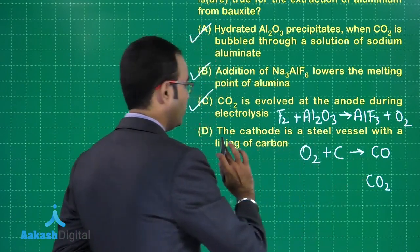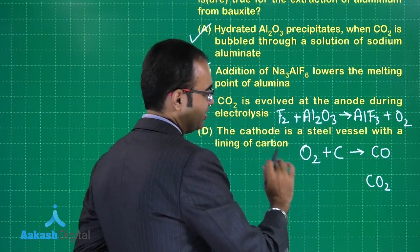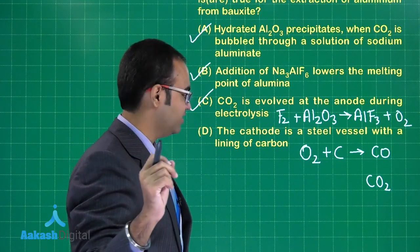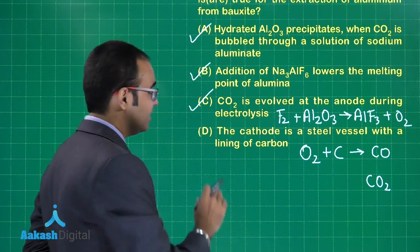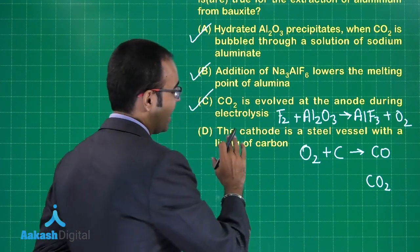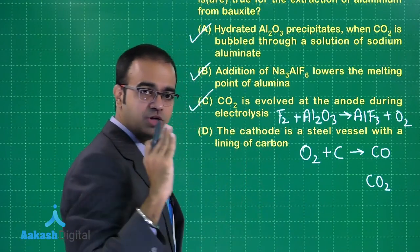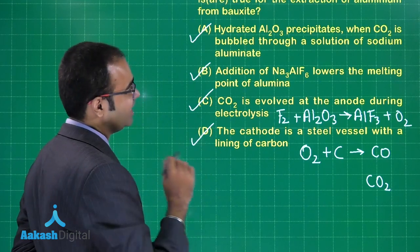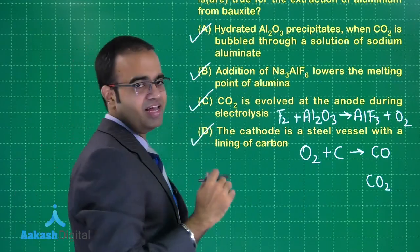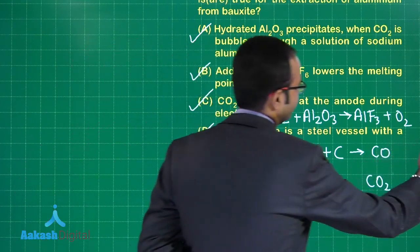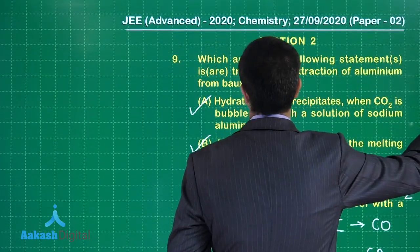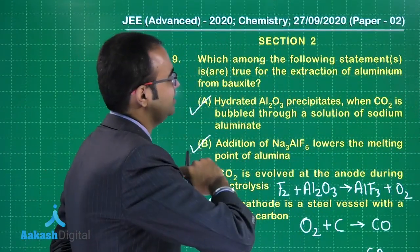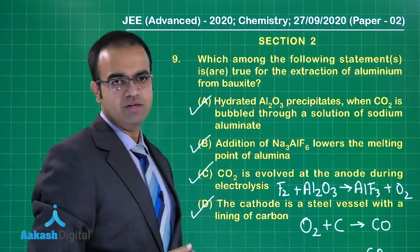Option D: the cathode is a steel vessel with a lining of carbon — that lining of carbon acts as the cathode, and the vessel is of steel. Both are correct, so option D is also correct. In this case, all four options are correct for question nine.